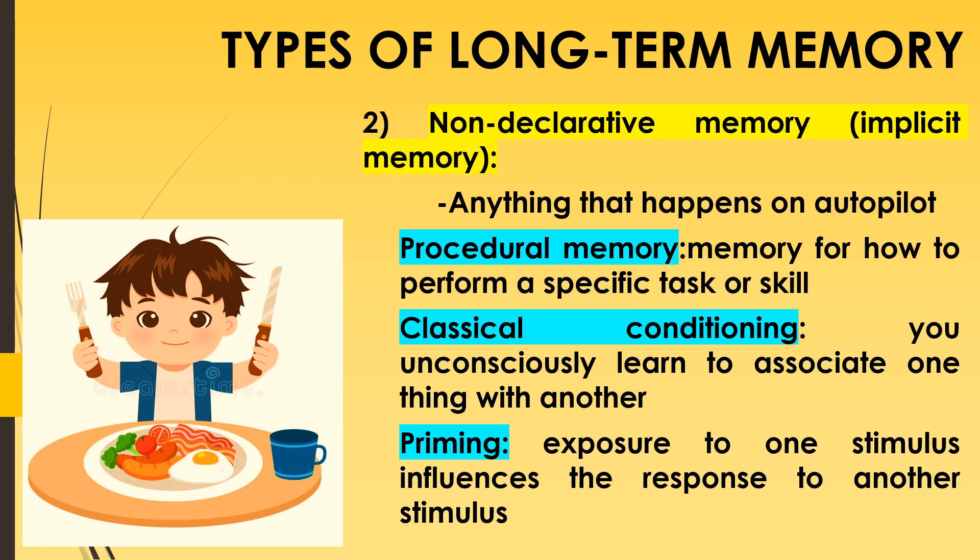The first type of non-declarative memory is procedural memory — the memory for how to perform a specific task or skill, like riding a bike or typing on a keyboard. Writing down your address is a procedural memory of how to write; the form is procedural, but the actual content belongs to other levels of memory. Procedural memory involves both thinking about what you know how to do and the muscle memory that allows you to do certain things without thinking.